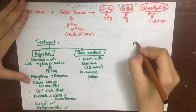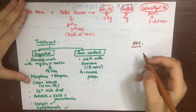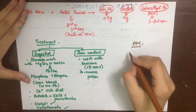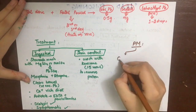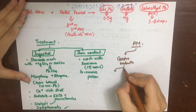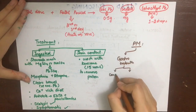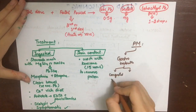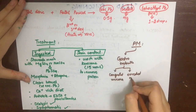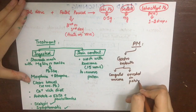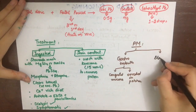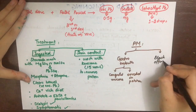If the patient dies, the post-mortem appearances will be that of gastroenteritis, and black colored offensive stool will be found in the large intestine. The gastroenteritis is manifested as congested mucosa which is eroded in patches.